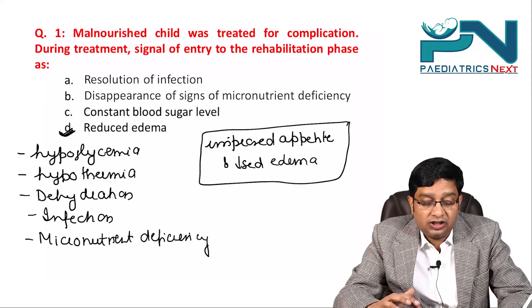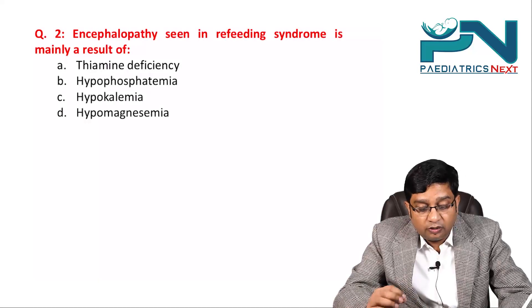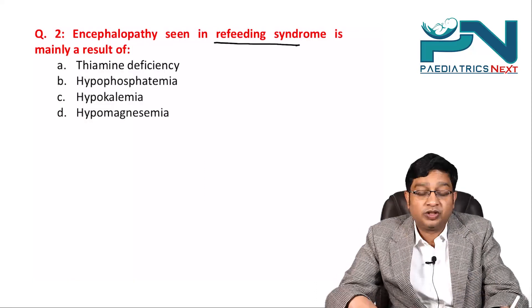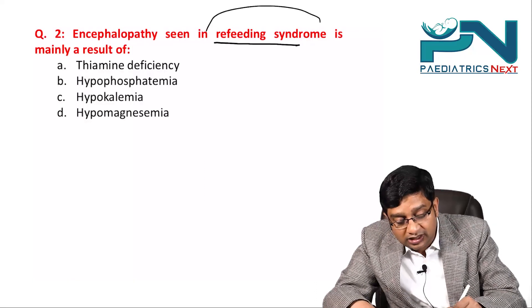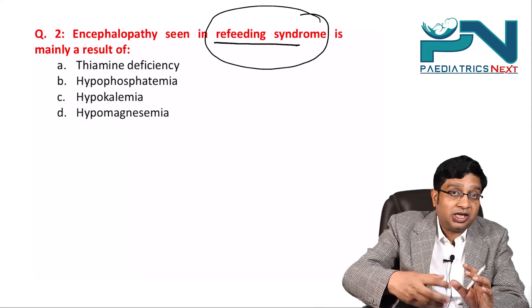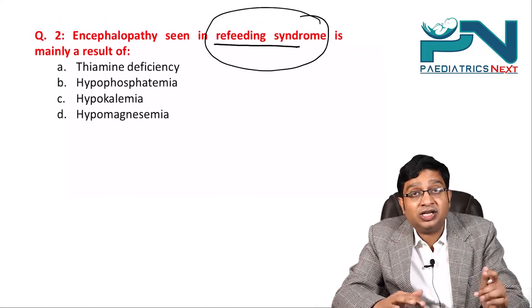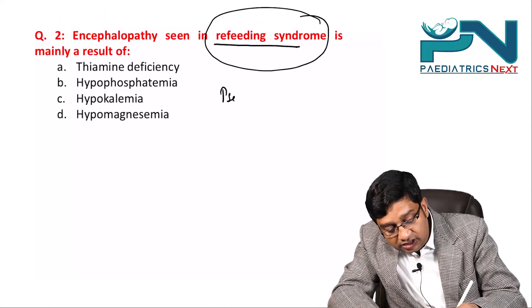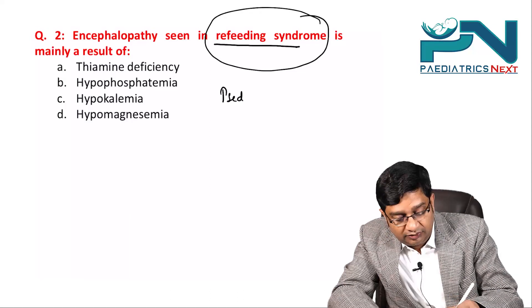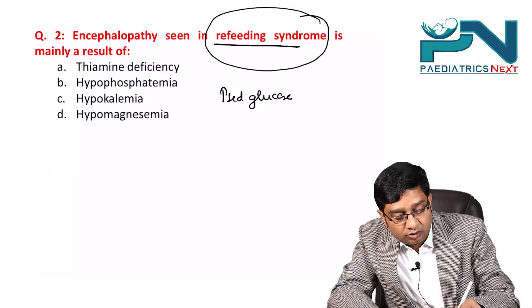Second question: encephalopathy seen in refeeding syndrome is mainly a result of what? In refeeding syndrome, when a child who was getting less to eat suddenly gets enough calories, there will be increased glucose inside the cell.